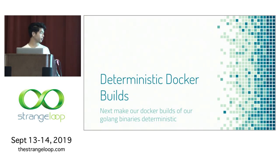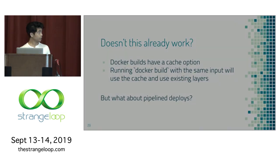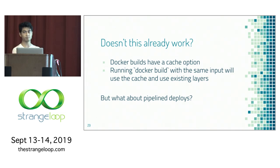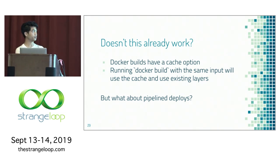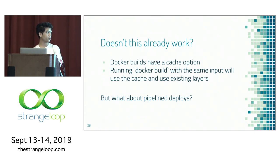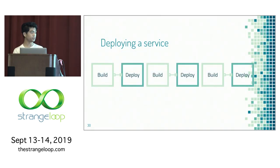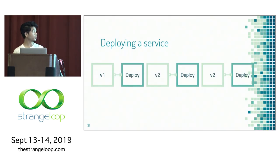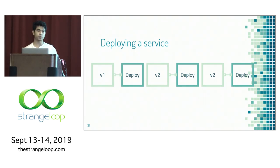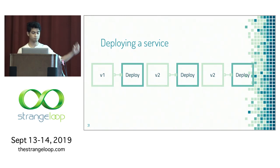We want to make Docker builds for our Go binaries deterministic. You might think — if you're familiar with Docker — doesn't this already work? Docker builds can use a cache where if you run docker build with the same exact input, it will use existing layers instead of rebuilding. But what happens with pipeline deploys? If you have a build step and a deploy step that you parallelize — so you don't wait for the previous version to deploy before starting to build the next — the issue is that a v2 deploy might not have finished, so you can't use its cache.